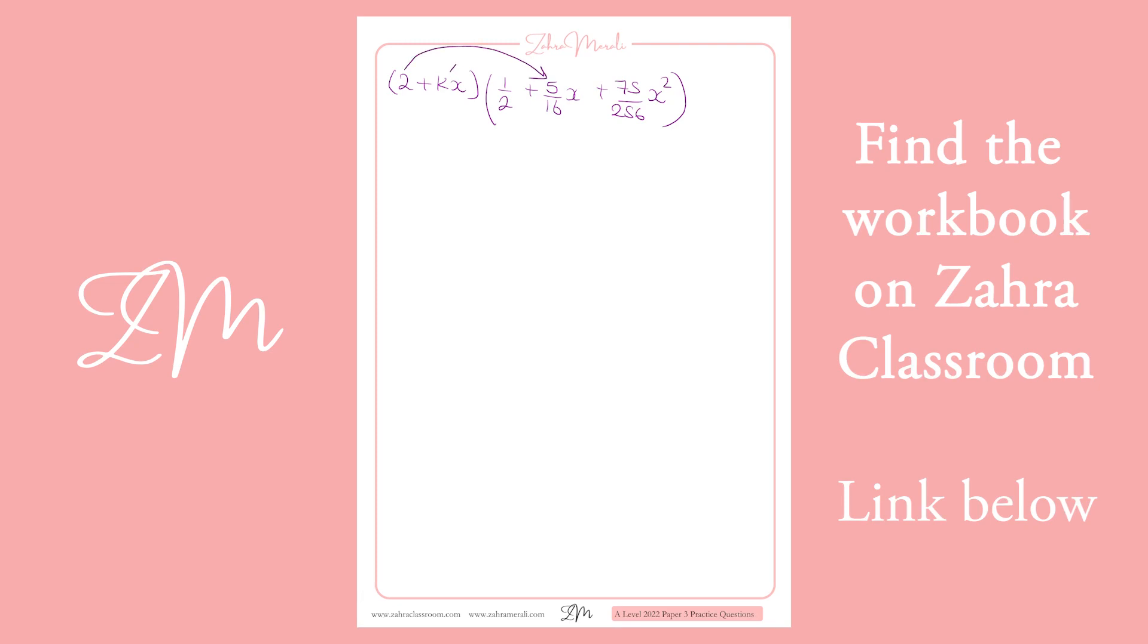So how are we going to get an x term? So the x term is going to come from that times that plus that times that. So if we compare our x terms, we've got 2 times 5 sixteenths, so 10 sixteenths, plus a half k equals 3 tenths. So therefore, k is going to equal minus 13 over 20.